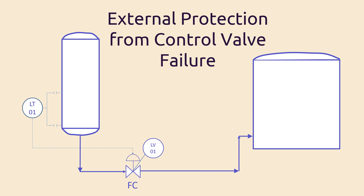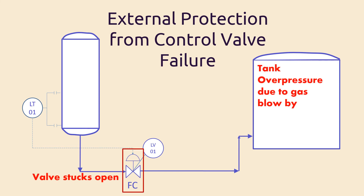So what if the valve mechanically stuck in the open position? This would mean that the vessel will be emptied from the liquid. After emptying the vessel, the gas in the vessel starts flowing to the tank. This means that the pressure starts to rise, which shall cause over-pressure in the tank. This can cause the welding between the tank shell and roof to fail, which shall lead to gas exposure to the atmosphere — a safety and environmental disaster. This is called the gas blow-by case.